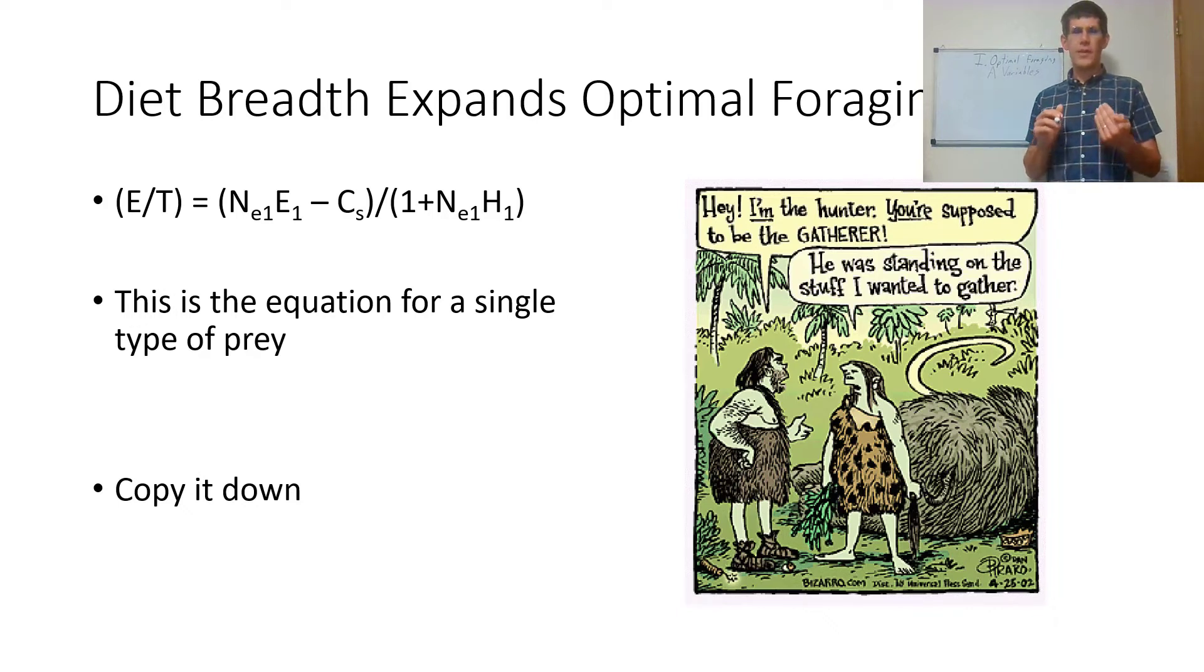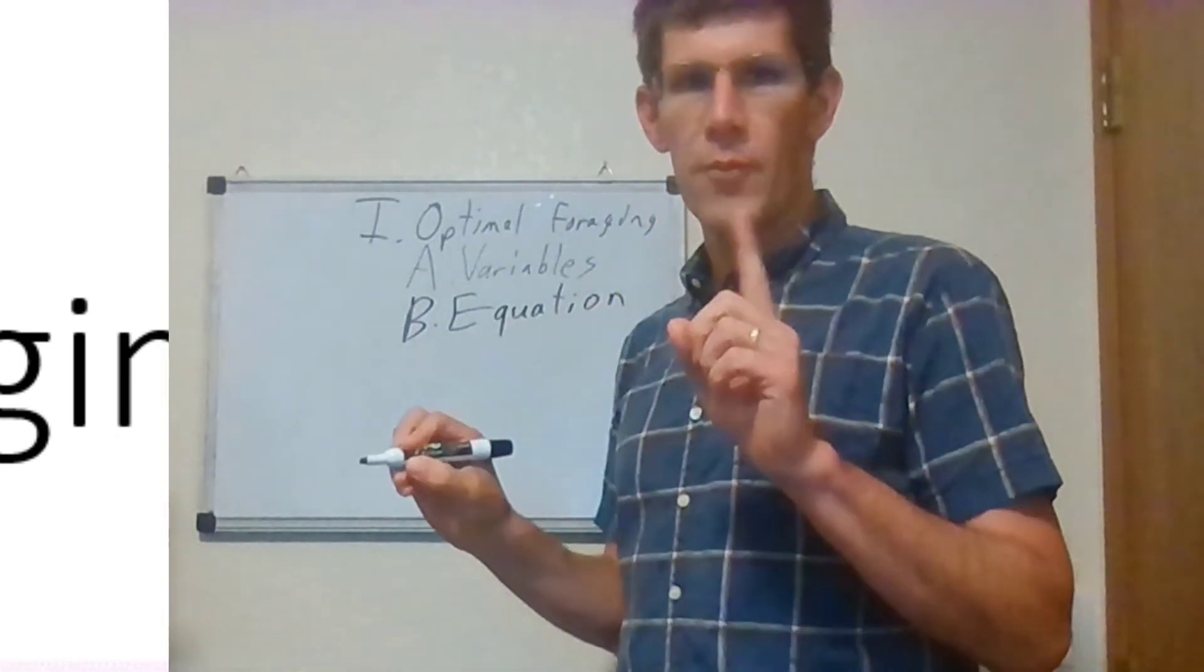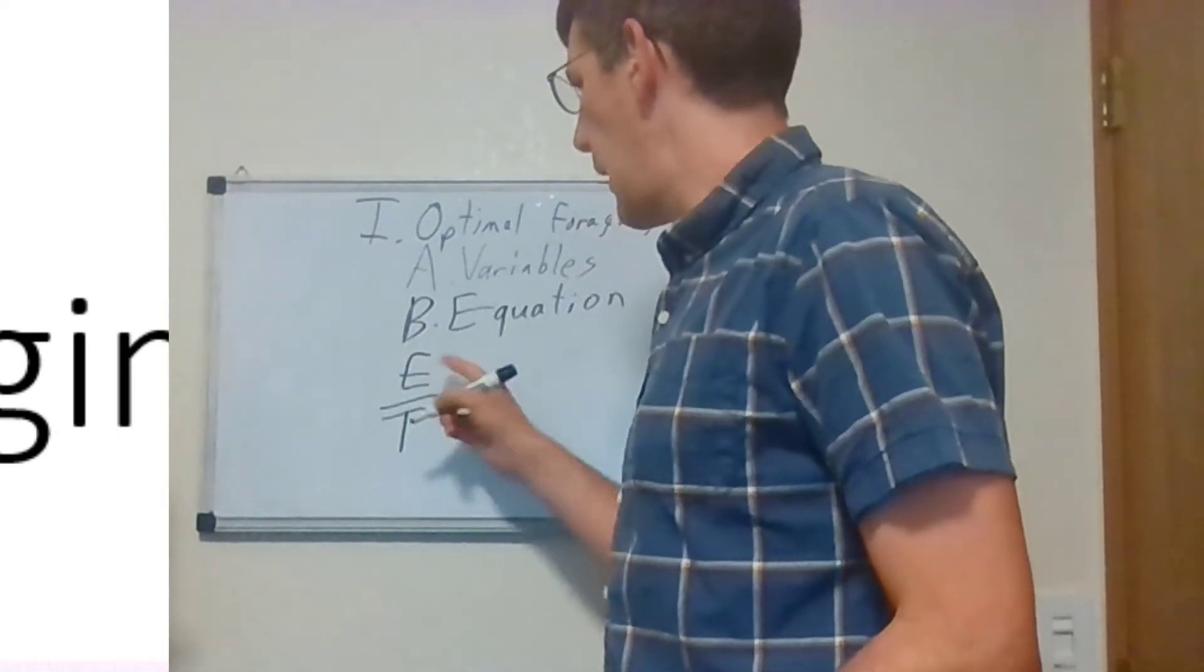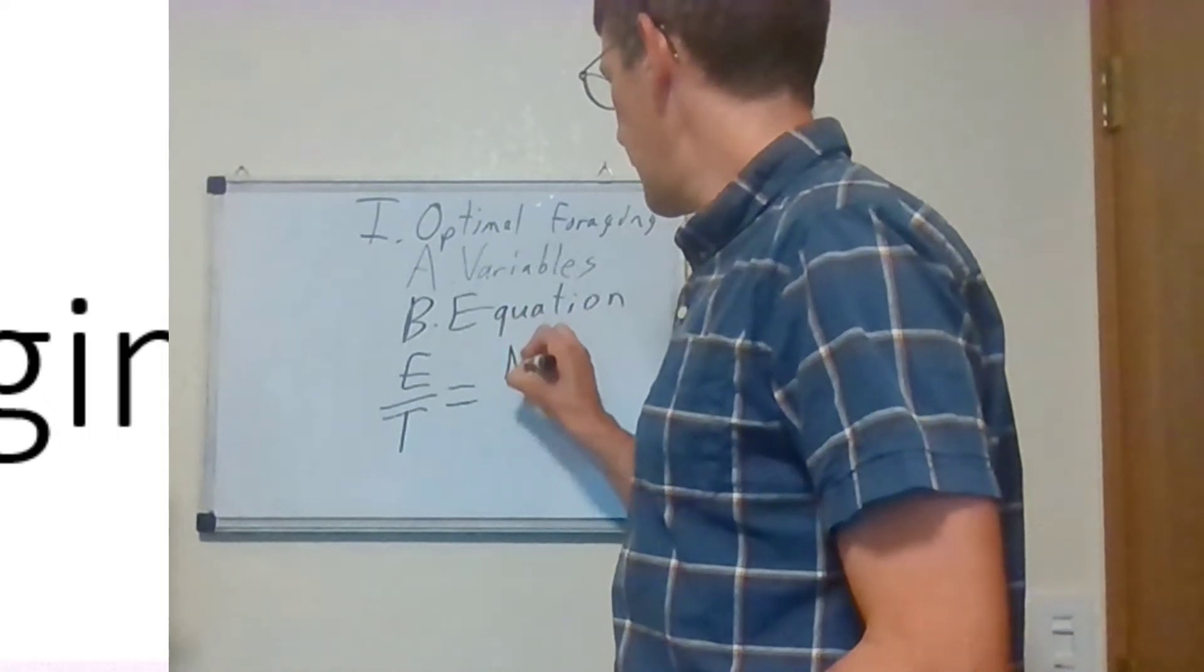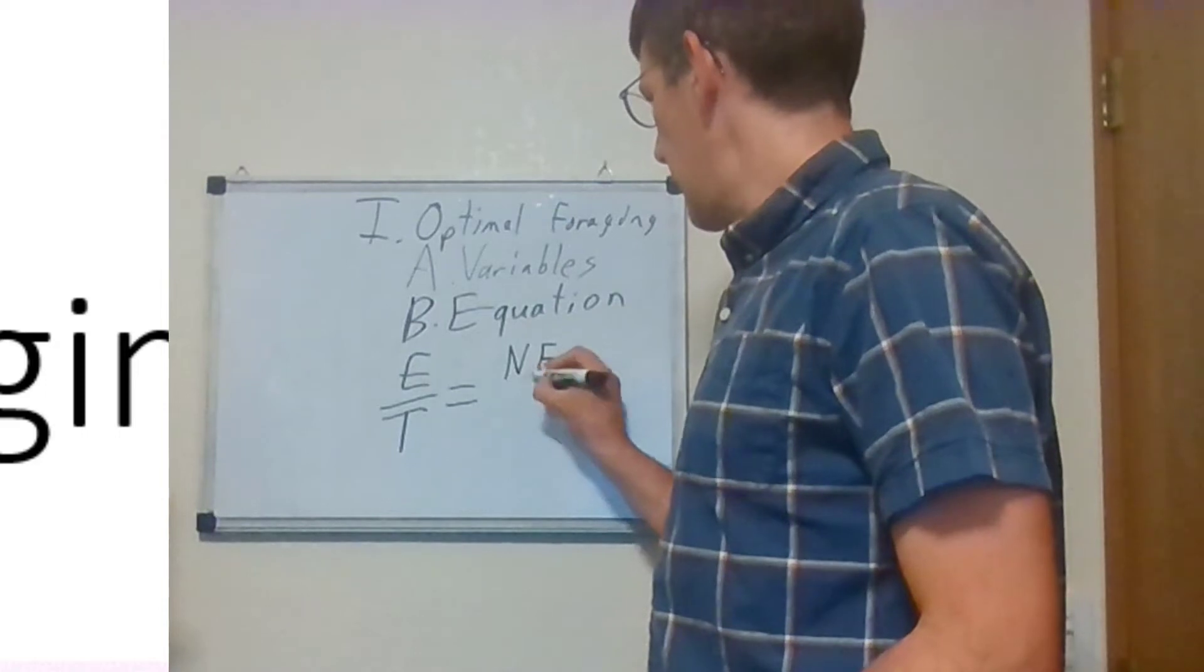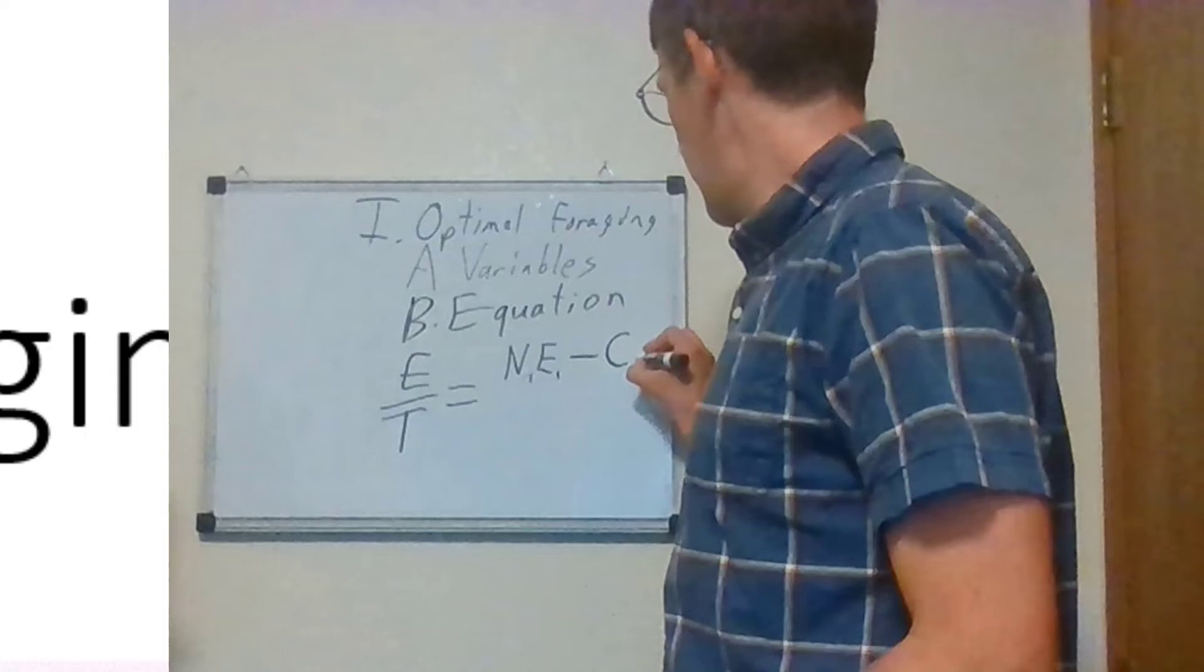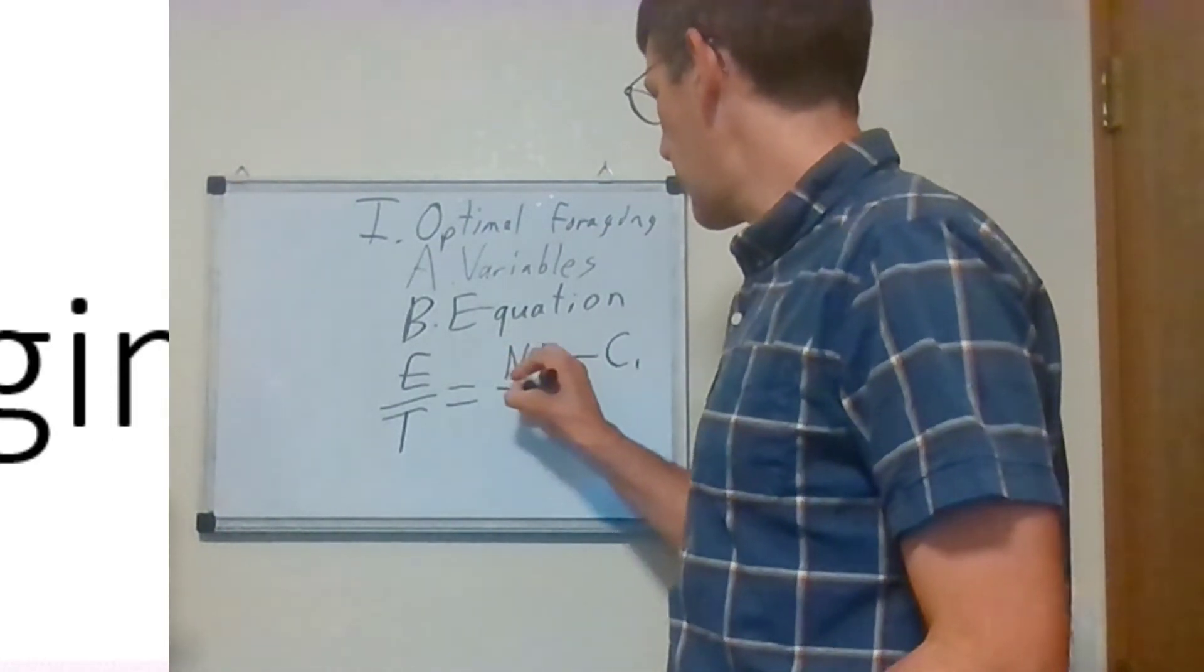The use of these variables gives us an equation. Here we have our optimal foraging equation. I'm going to put some ones on here because this is for one type of prey. You have energy per unit time is going to be equal to the prey population times the energy spent hunting them. So you have E1, energy for one, minus the cost there. That's the searching one.